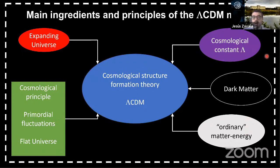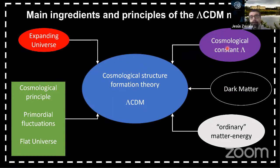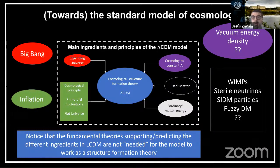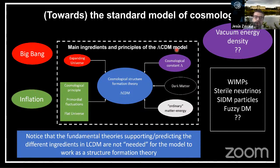The energy-matter components of the model include ordinary matter and energy from the standard model of particle physics, and then the big unknowns — dark matter and the cosmological constant. The model doesn't answer the question about the origin of any of these; it just takes them as ingredients. Towards a standard model of cosmology, you have to surround the Lambda CDM structure formation theory with other theories that explain all these components — a Big Bang theory, inflation, and new physics for dark matter and the cosmological constant.